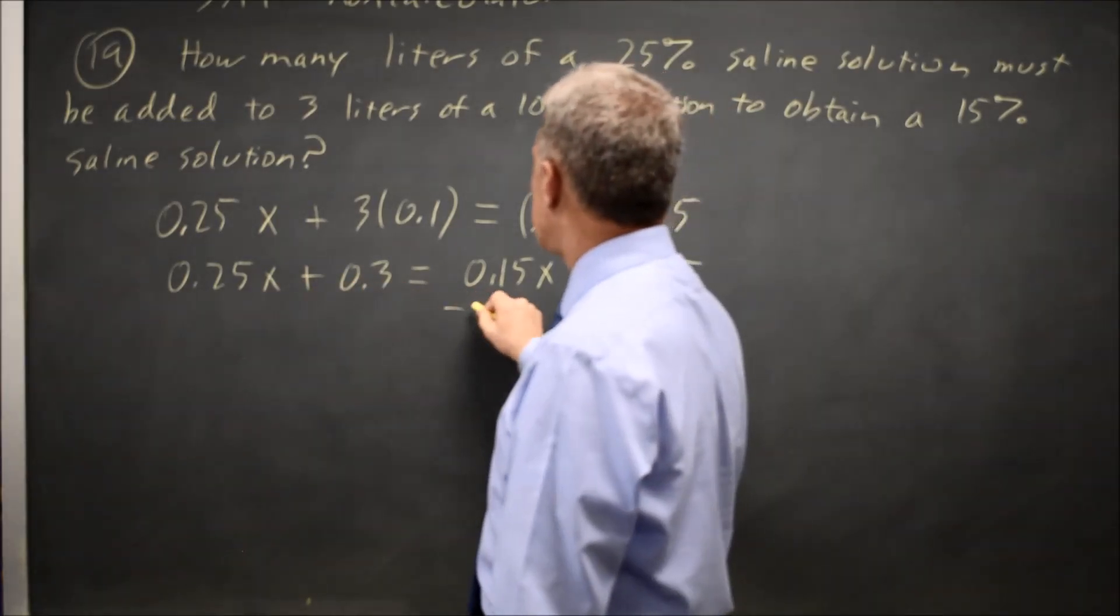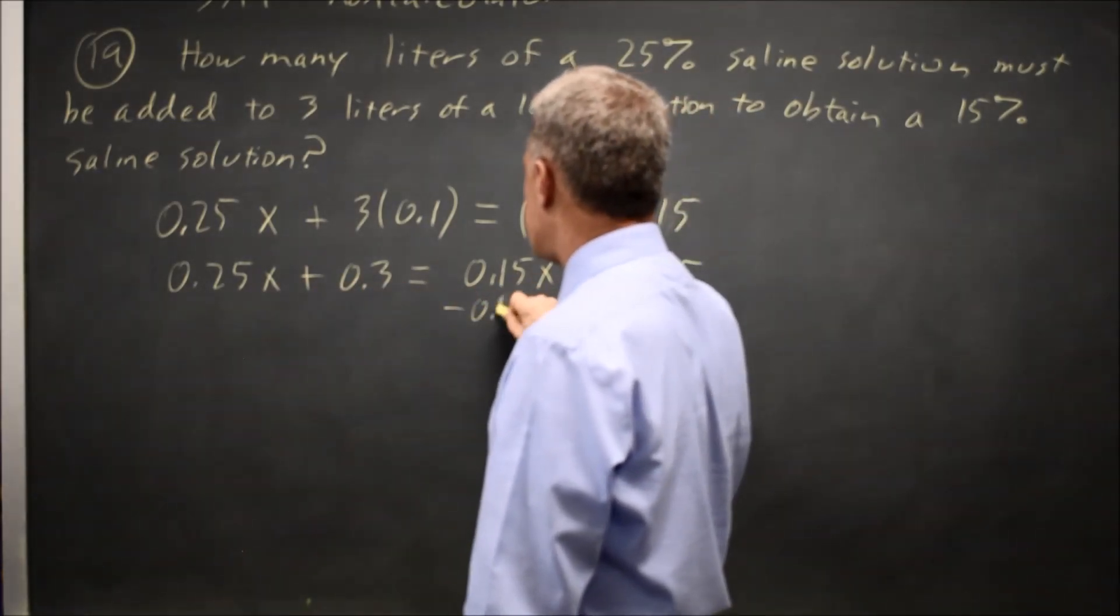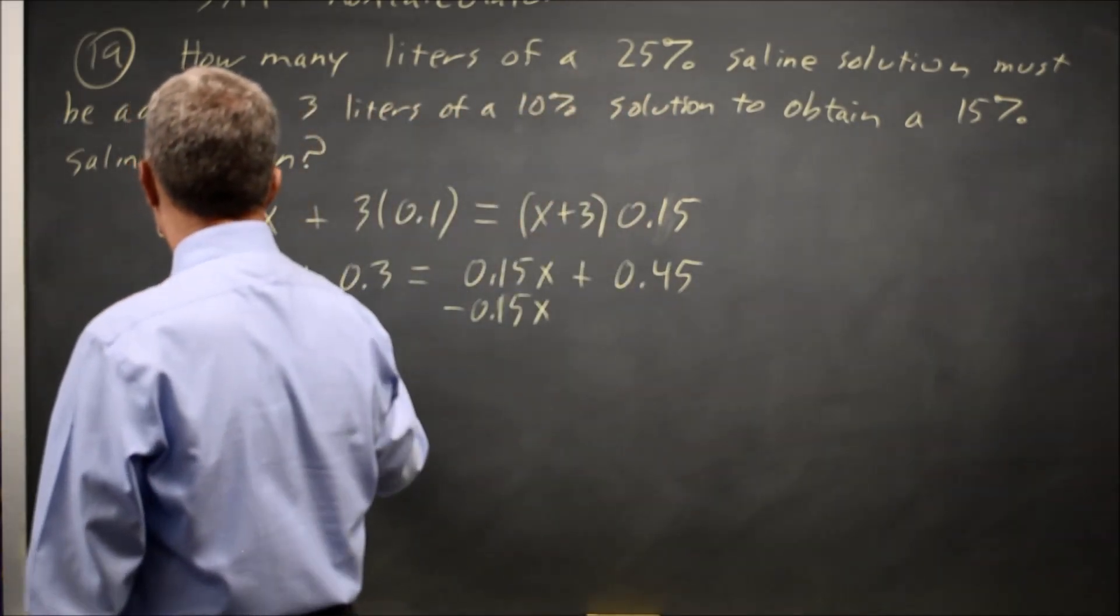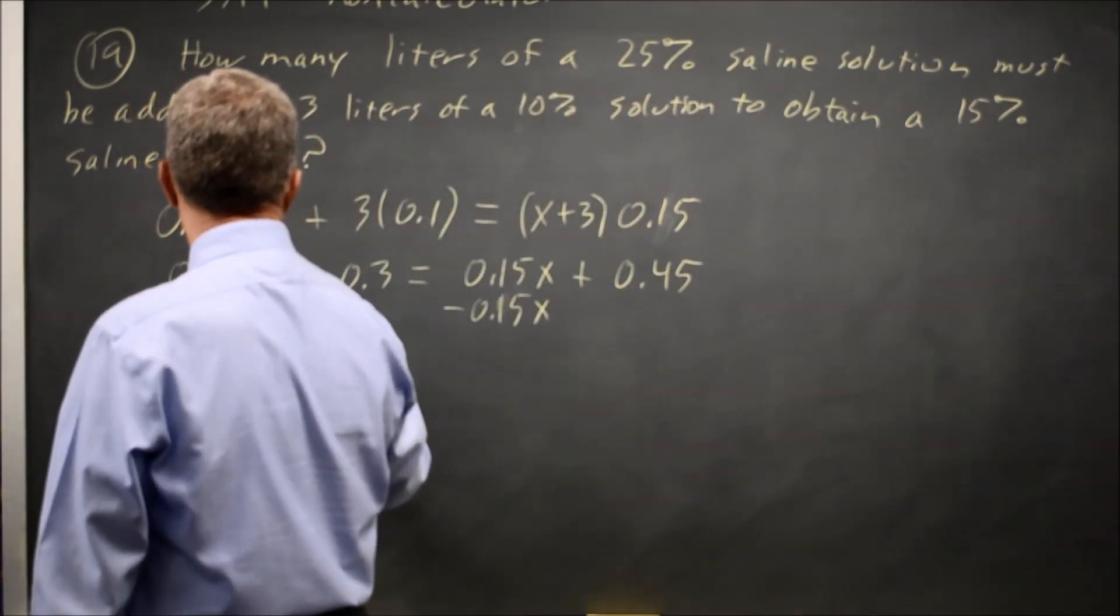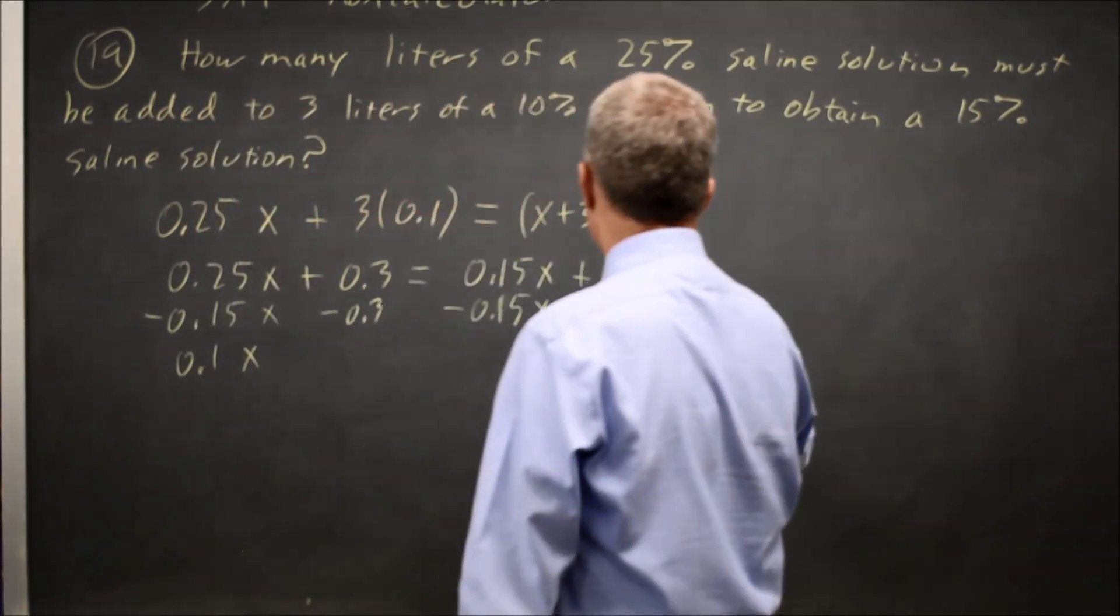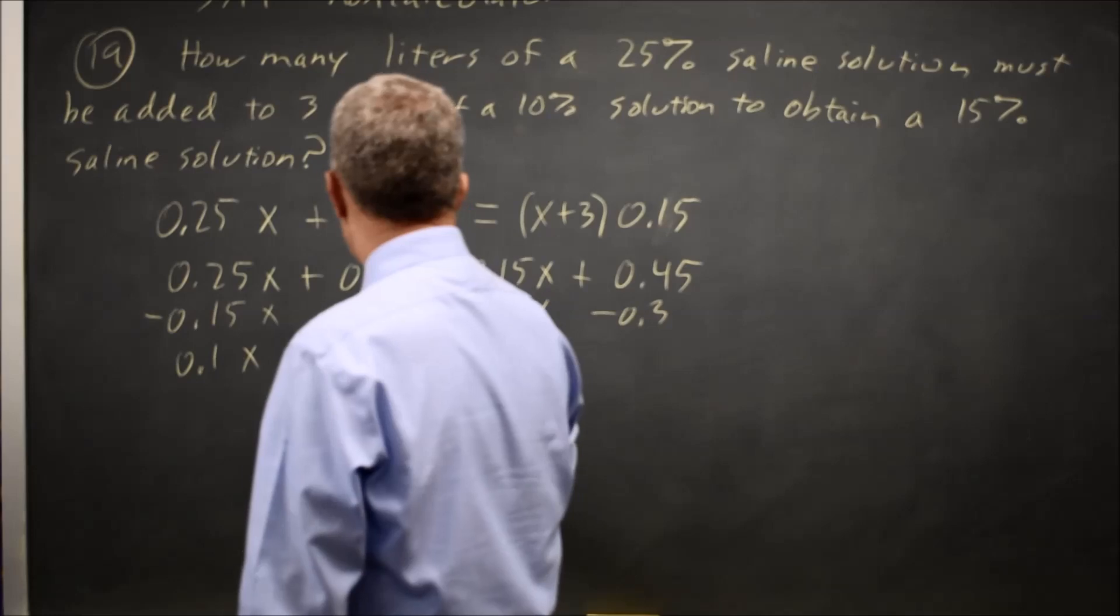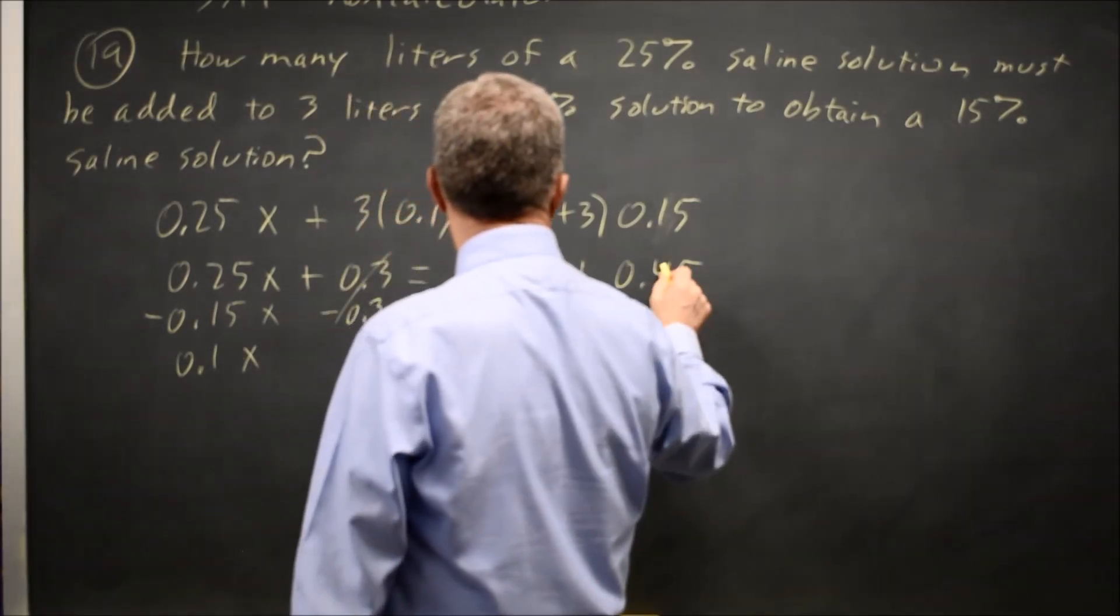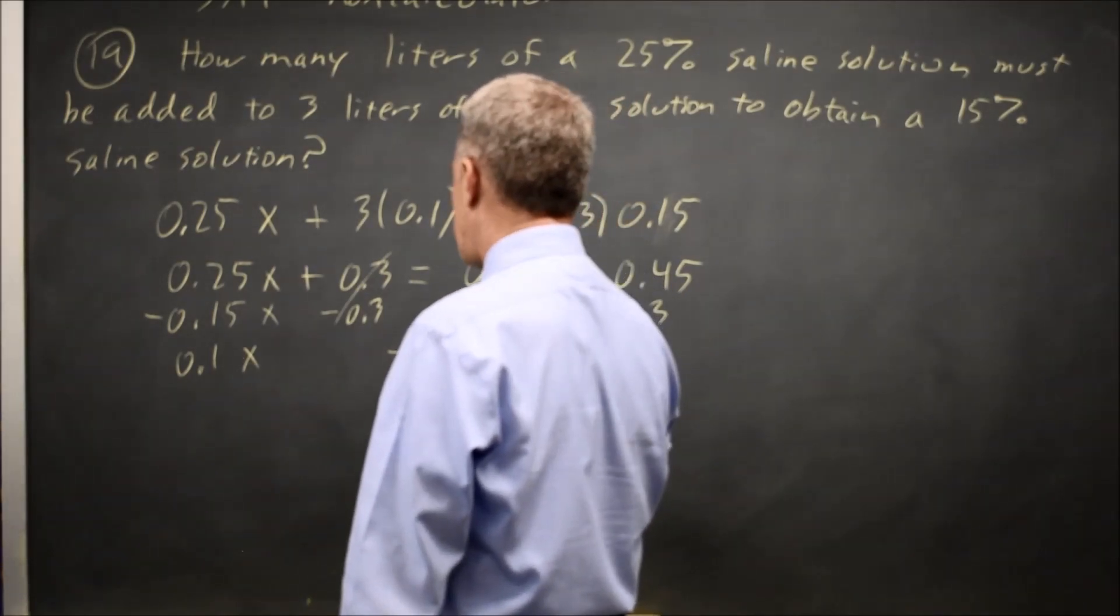Now I want to solve for x. If I subtract 0.15x from both sides, I get 0.1x. If I subtract 0.3 from both sides, I get equals, the x is cancelled, the 0.3 is cancelled, 0.45 minus 0.3 is 0.15.